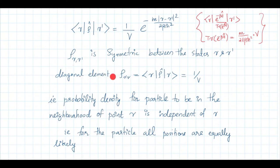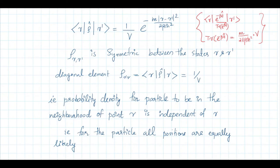For the diagonal element, setting r = r' gives ⟨r|ρ|r⟩ = 1/V. The diagonal element is independent of r — it is the probability density for the particle to be in the neighborhood of point r, and it is constant. For the particle, all positions are equally likely, and the probability of finding it at any particular point is 1/V.